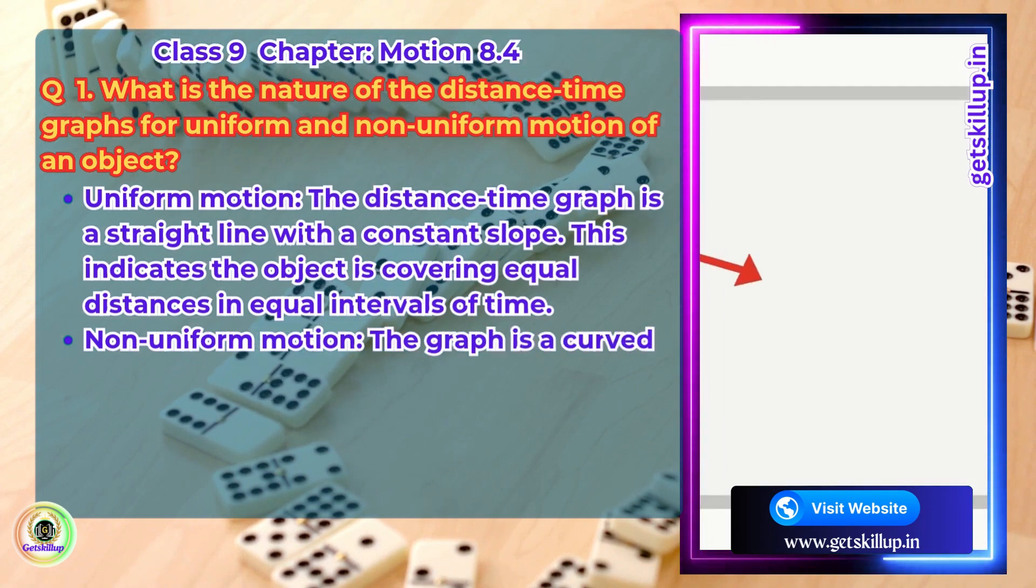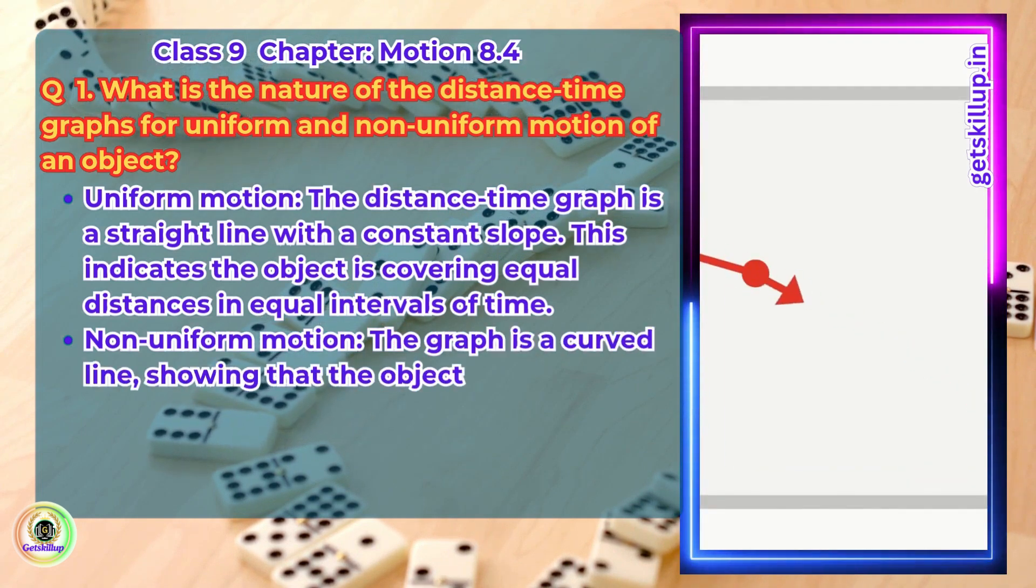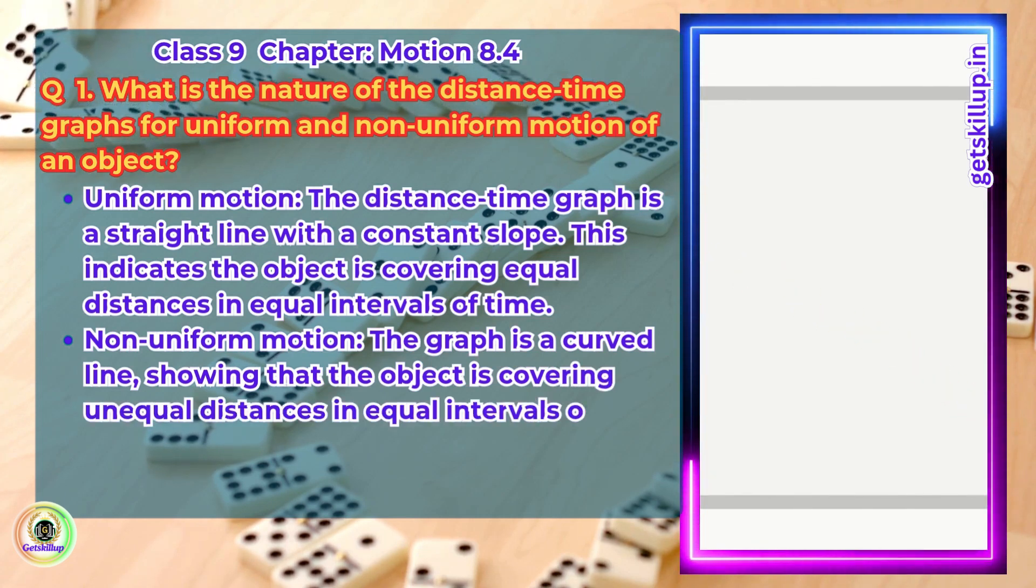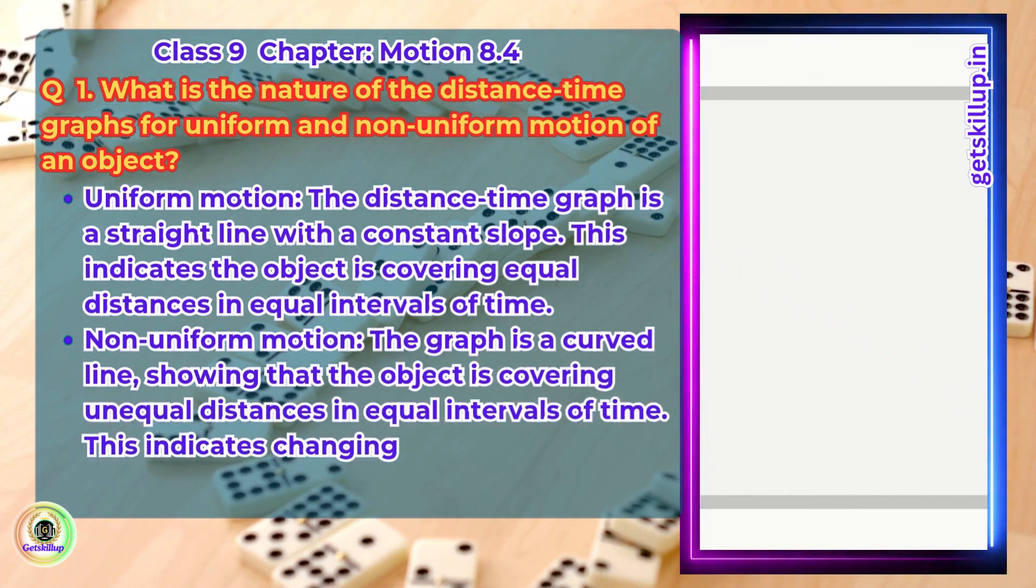Non-uniform motion. The graph is a curved line showing that the object is covering unequal distances in equal intervals of time. This indicates changing speed.